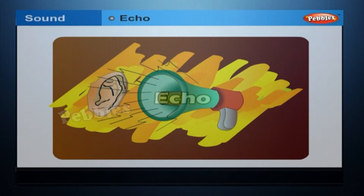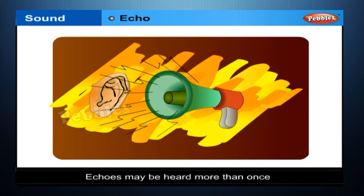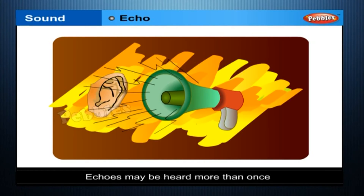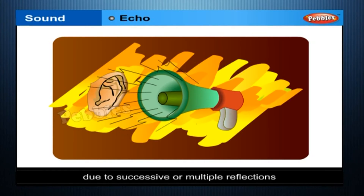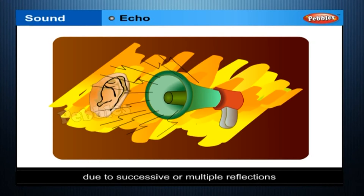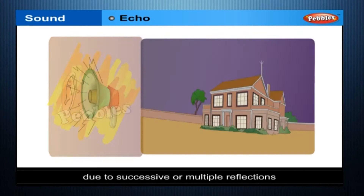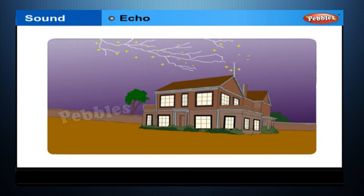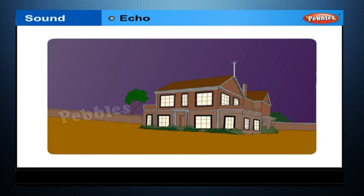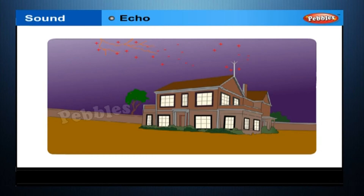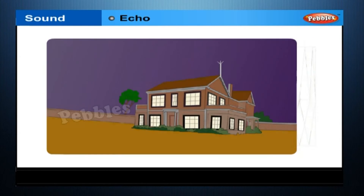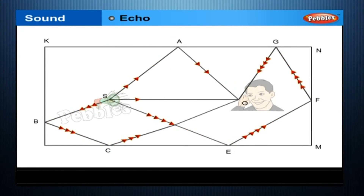Echo. Echoes may be heard more than once due to successive or multiple reflections. The rolling of thunder is due to the successive reflections of the sound from a number of reflecting surfaces, such as the clouds and the land.